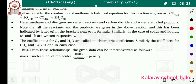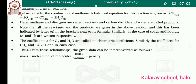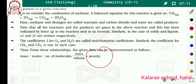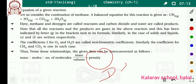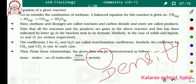Similarly, the coefficient for CH4 and CO2 is one in each case. Yahan pe CH4 one hai aur CO2 bhi one hai — toh unka stoichiometric coefficient one ho gaya. Thus, from this relationship, the given data can be interpreted as follows: mass, moles, number of molecules, and density. Density matlab mass upon volume.